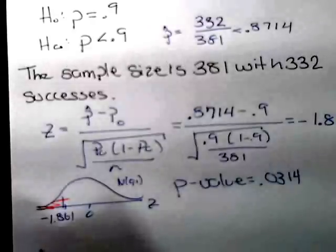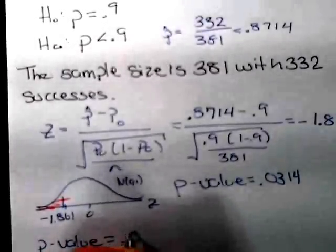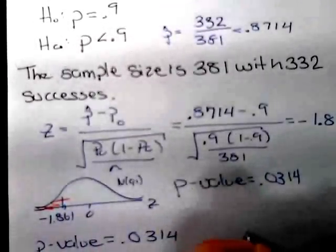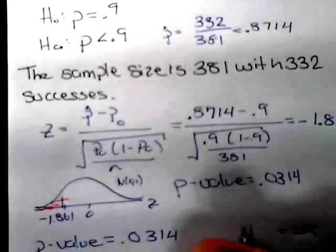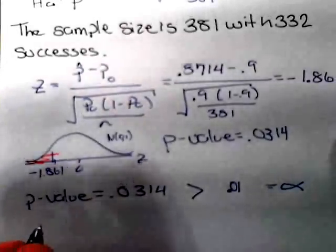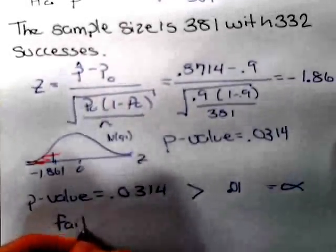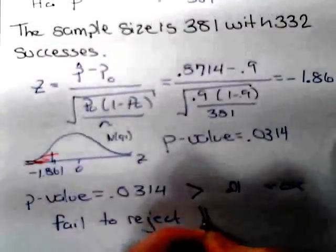Our p-value, which is 0.0314, comparing to the level of significance alpha of 0.01, our p-value is greater. When we have a large p-value like this, we fail to reject the null hypothesis.